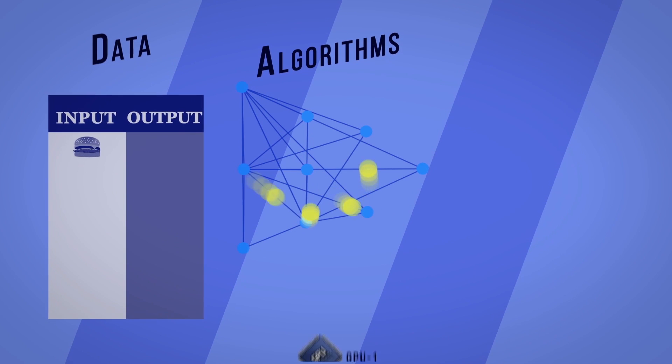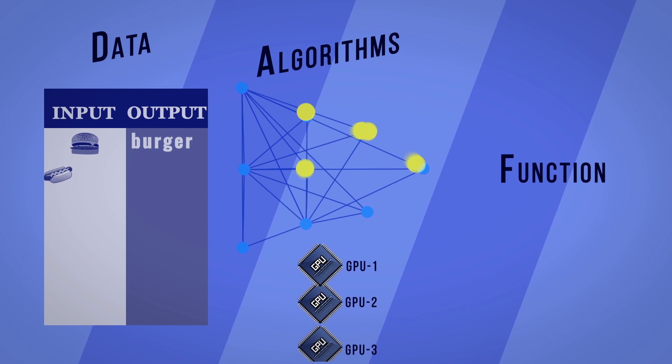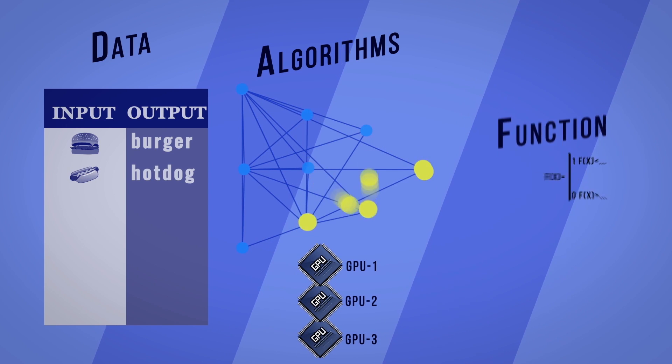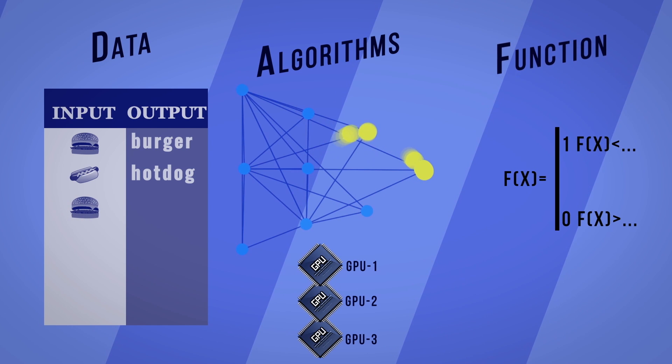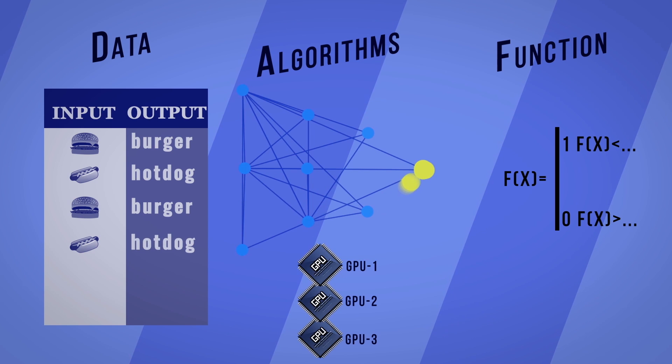Neural nets have been around since the 50s and they're considered universal function approximators. That means that given any set of inputs and outputs, if given enough examples, they can learn the function, the mapping, that relates both of them together. We can then use this function to predict new outputs given some set of inputs.